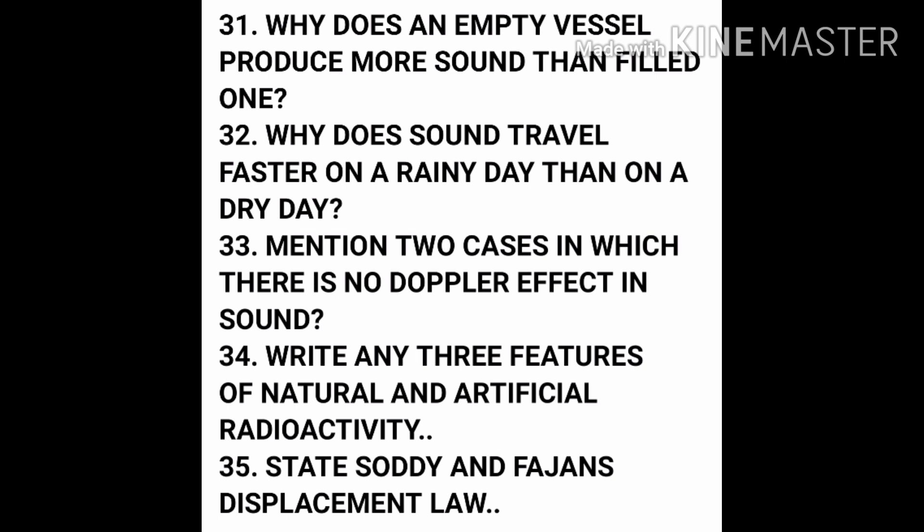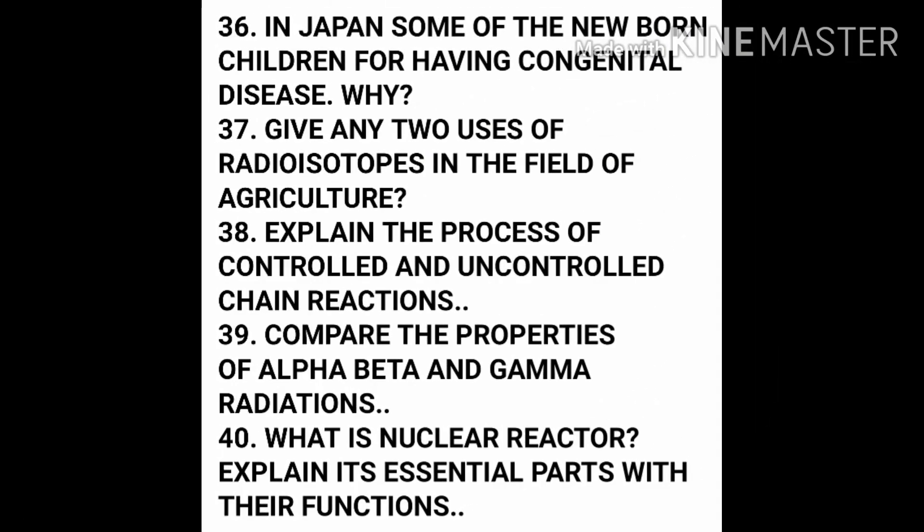The last lesson is Nuclear Physics — very very important. Study all the questions in this lesson. Write any three features of natural and artificial radioactivity. State Soddy and Fajans' Displacement Law. In Japan, some newborn children have congenital disease — why? Give any two uses of radio isotopes in agriculture. Explain the process of controlled and uncontrolled chain reactions. Compare the properties of alpha, beta, and gamma radiations. What is a nuclear reactor? Explain its essential parts with their functions — the diagram is very very important.